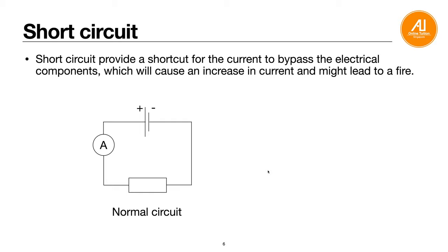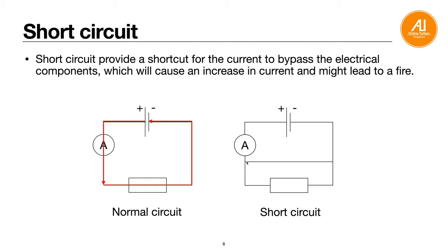Short circuit: a short circuit provides a shortcut for the current to bypass the electrical component, causing an increase in current that leads to fire. In a normal circuit, current flows out from the positive terminal and flows back in. But in a short circuit, an extra wire gives the current a second option - rather than flowing through the resistor, it flows directly back into the battery. No current flows through the resistor, which is why the current increases and may overheat the wires, causing fire.